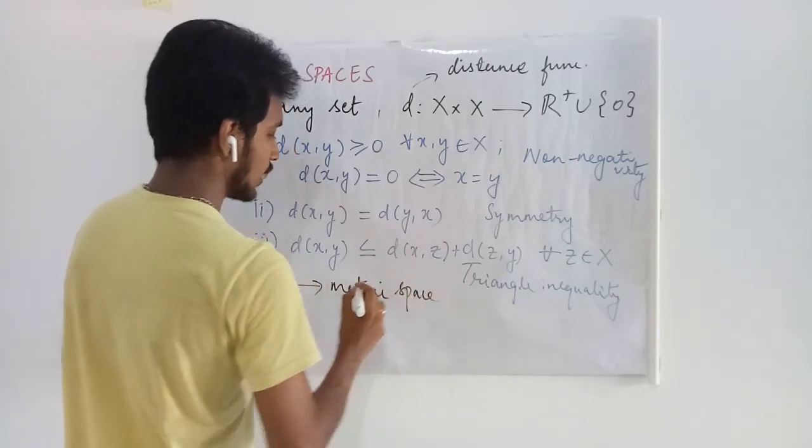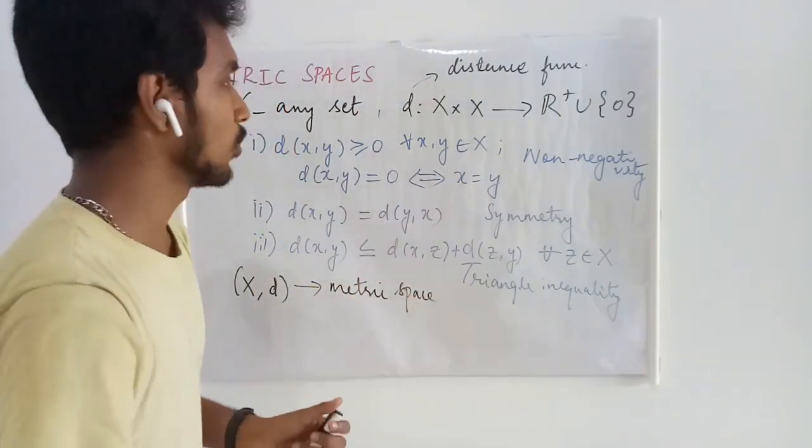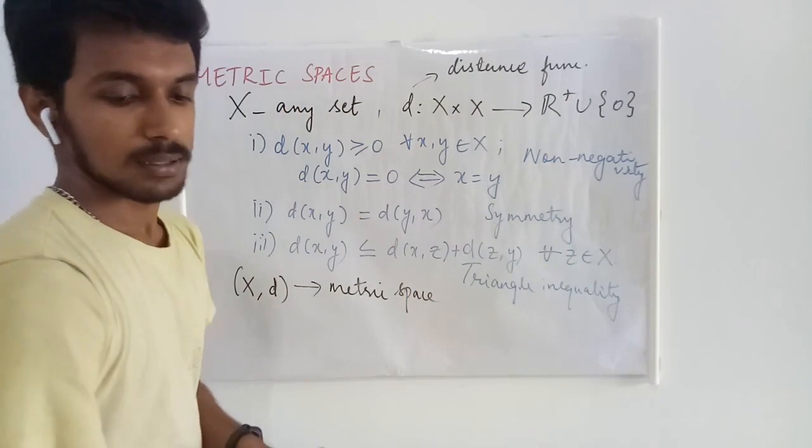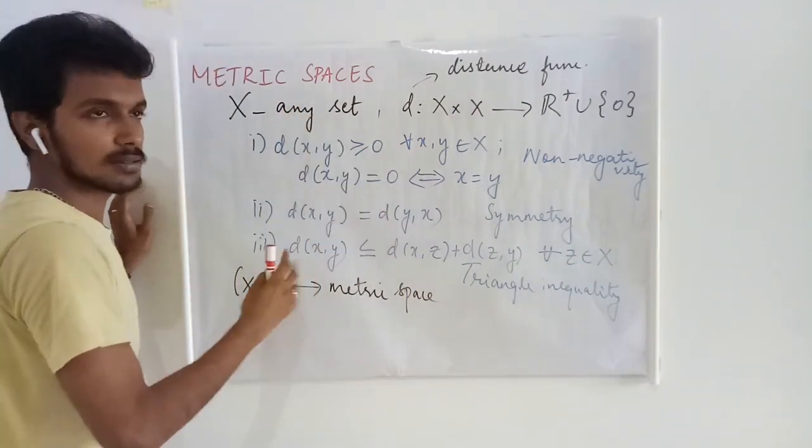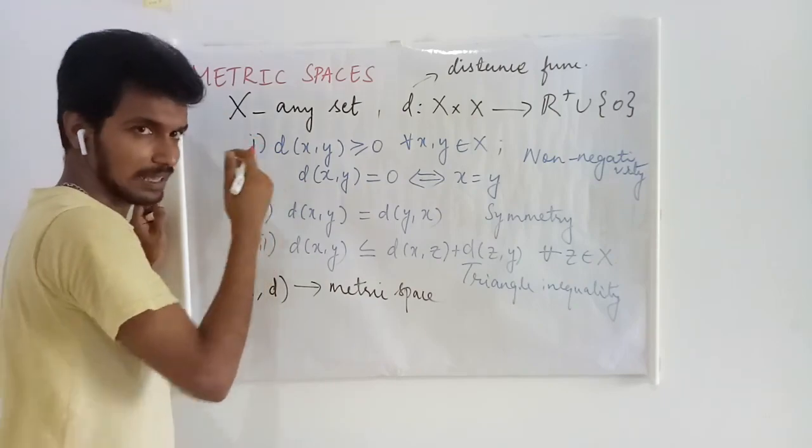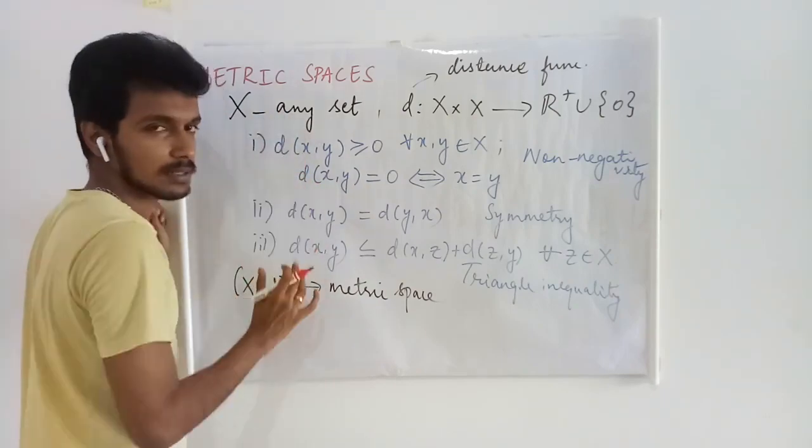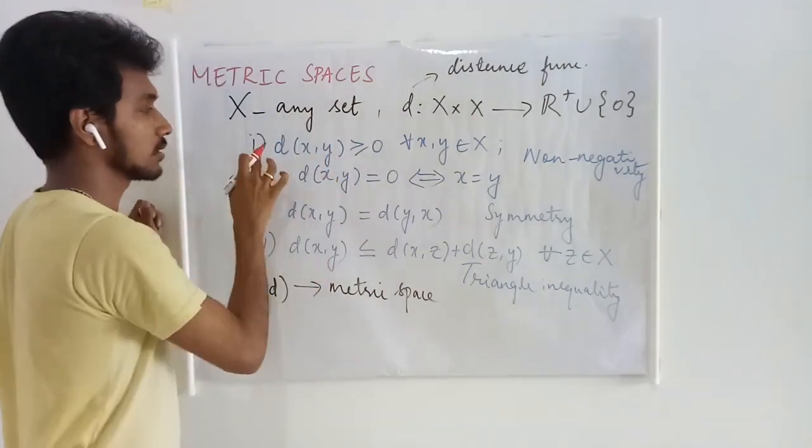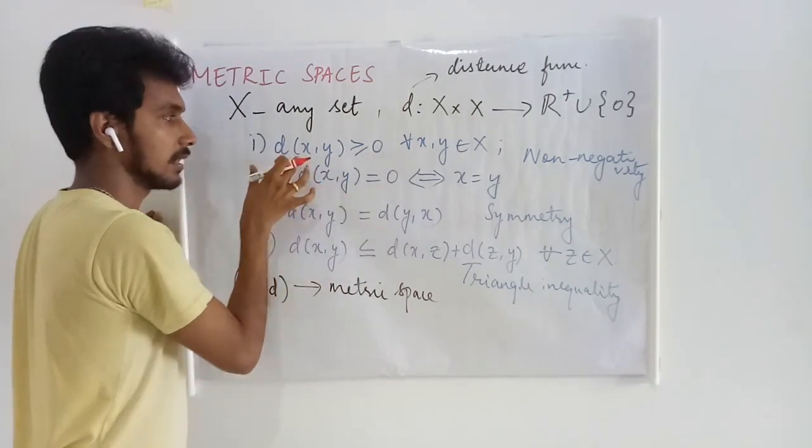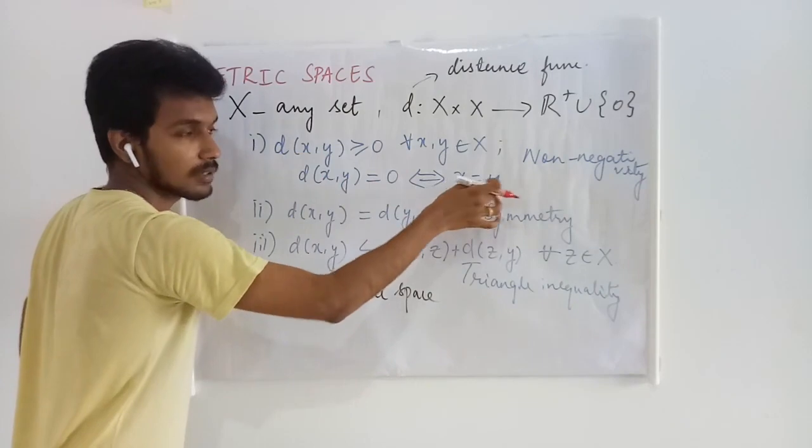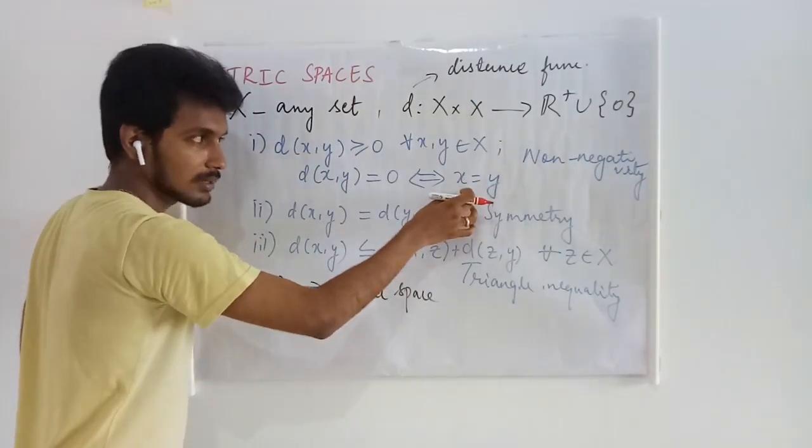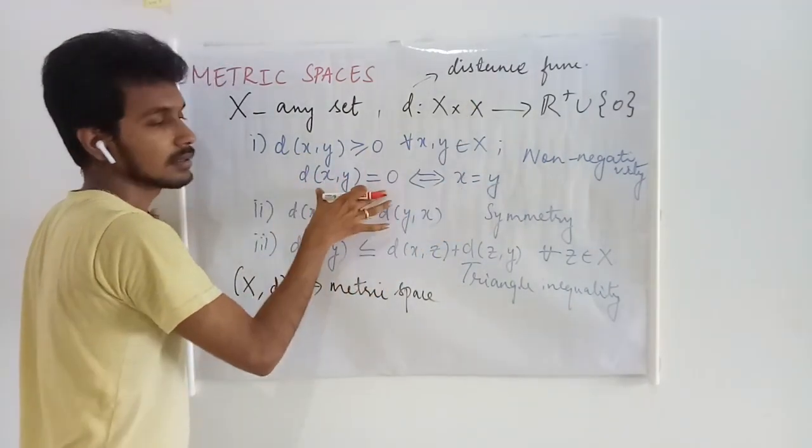Here I would like to register one more thing. What happens here is we actually have four conditions cleverly put into three conditions. In the first condition we have two things: generally it has to be non-negative, and if it is zero that must imply x and y are the same, and x and y being the same implies the distance is zero.